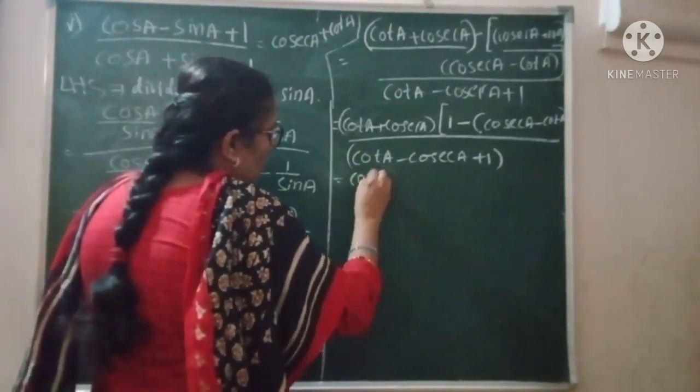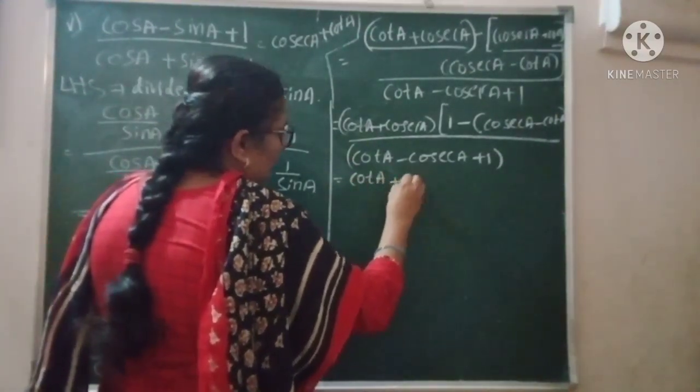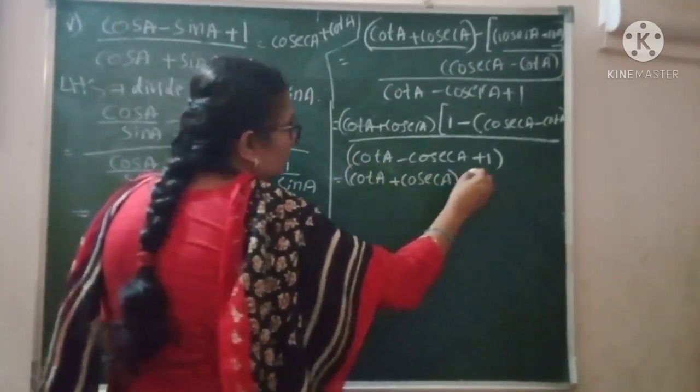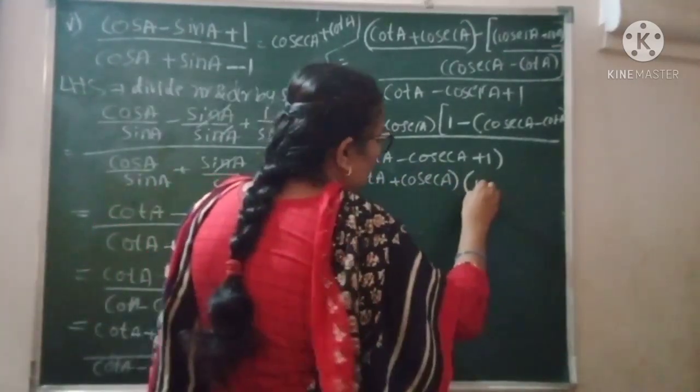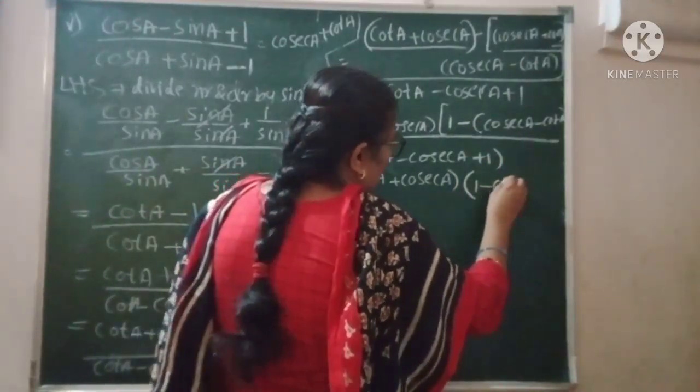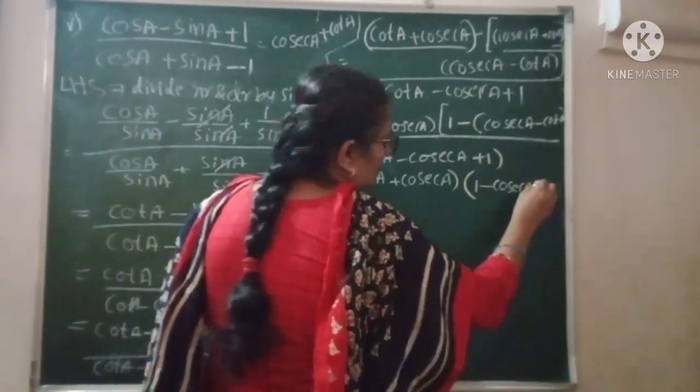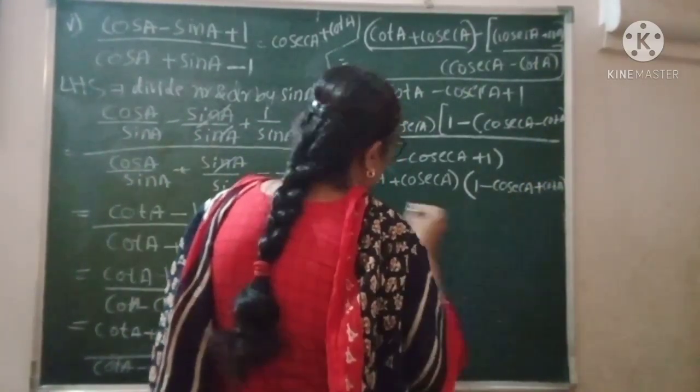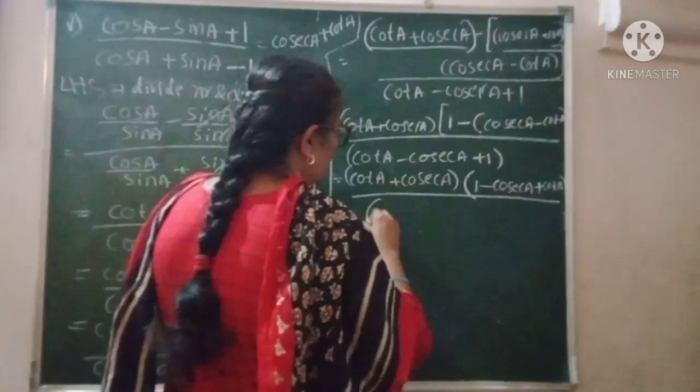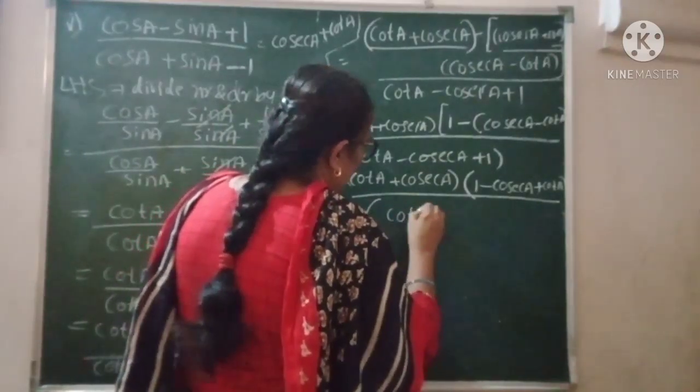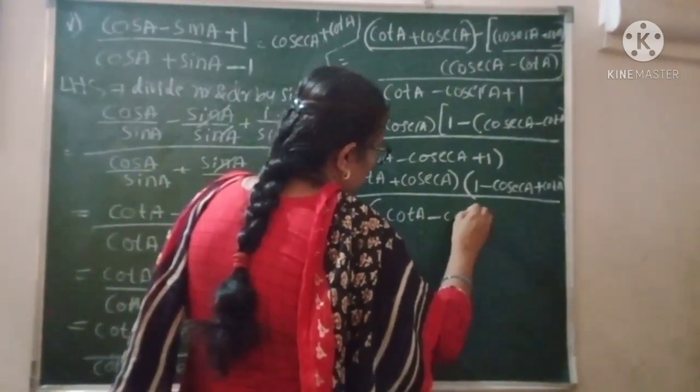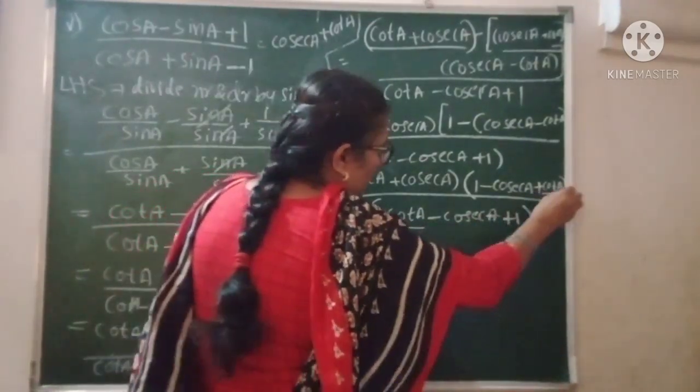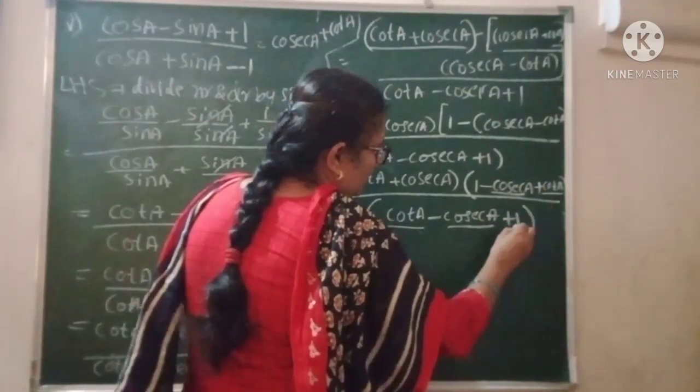This equals cot A plus cosec A. Leave it as is. In the bracket: 1 minus cosec A minus minus plus cot A.